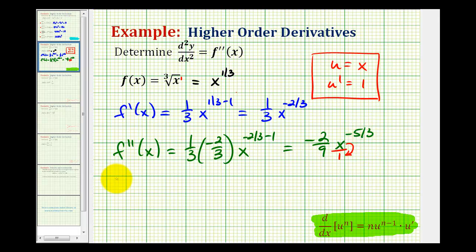So let's rewrite this as f double prime of x is equal to negative two all over nine x to the power of five thirds, which may be what your textbook shows as a correct answer.